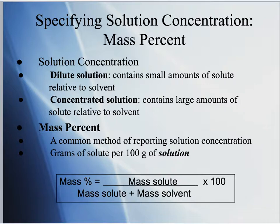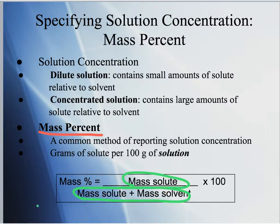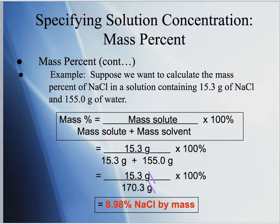Of course, many solutions used in chemistry are colorless, so you can't use color to tell how concentrated a solution is. The first method to measure concentration is called mass percent — a common method of reporting solution concentration. It's the mass of the solute divided by the total mass of the whole solution, multiplied by 100. It's essentially grams of solute per 100 grams of solution.